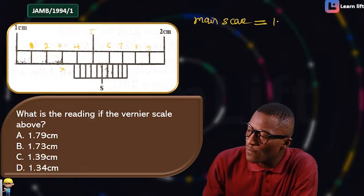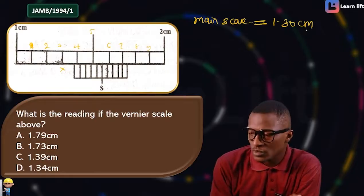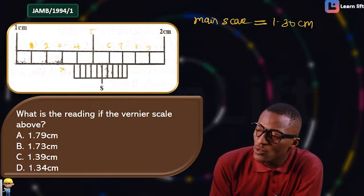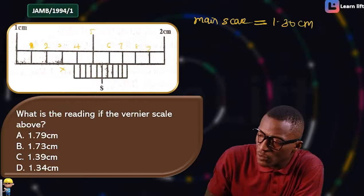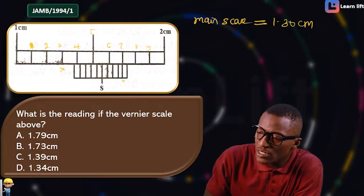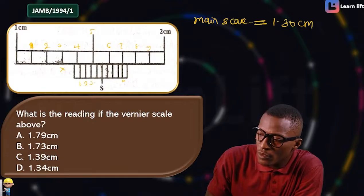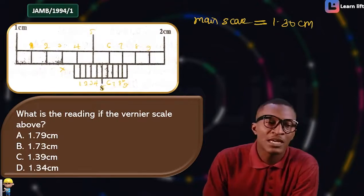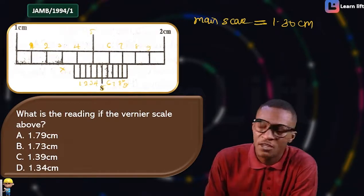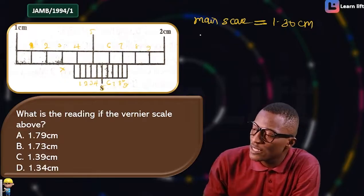So the main scale reading is 1.30 cm. Now let's find where the main scale and vernier scale lines meet. Counting along: 1, 2, 3, 4, 5, 6, 7, 8, 9 — they meet at the 9th division. So the vernier scale reading...